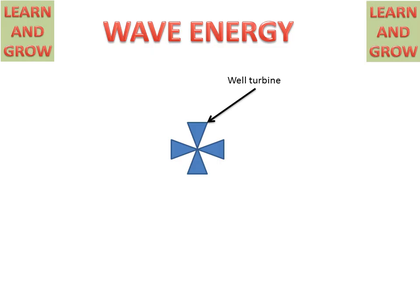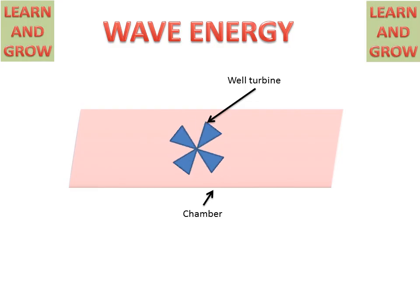It will rotate in the same direction independent of the air flowing through it. We have a chamber in which a well turbine is set up. If air comes from the left side, it will rotate in the clockwise direction. If air comes from the right-hand side, it will also rotate in the clockwise direction.